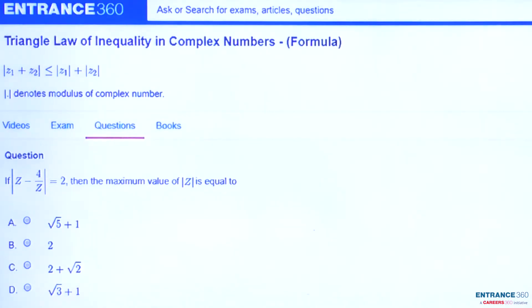If mod z minus 4 by z equals 2, then we have to find the maximum value of mod z.